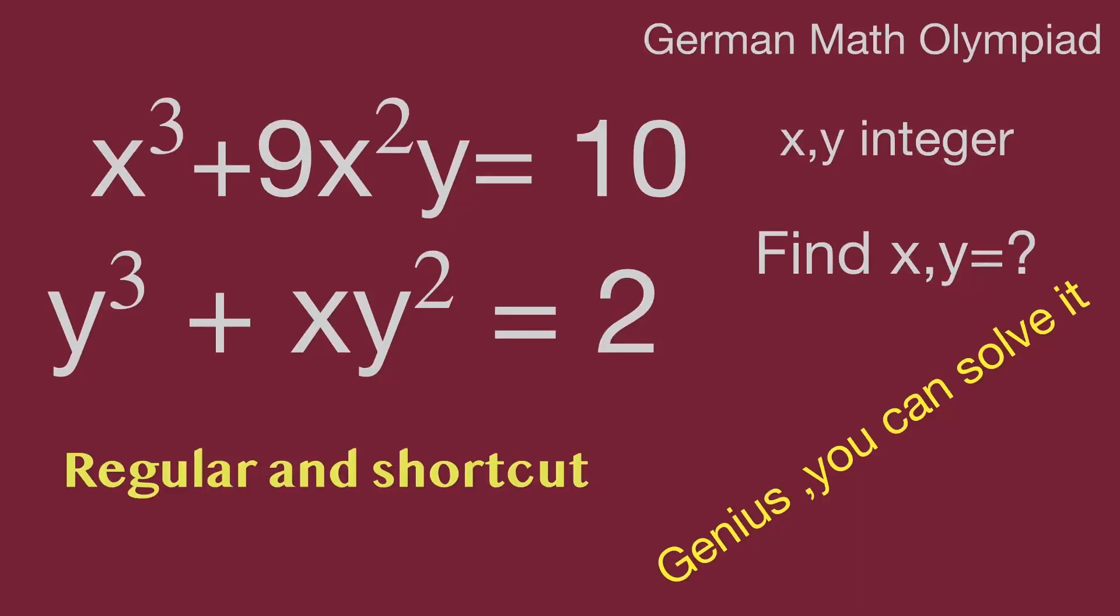Hello, you are watching Balahippo Math Genius Riddle. The question comes from German Math Olympiad test. x cubed plus 9x squared y equals 10, y cubed plus xy squared equals 2. x and y are integers. Find the value for x and y.